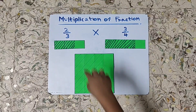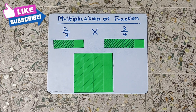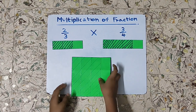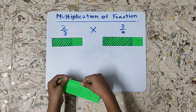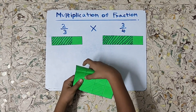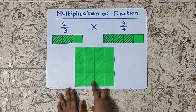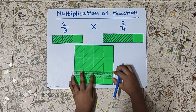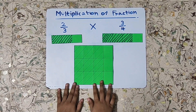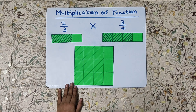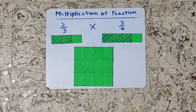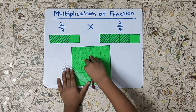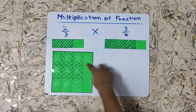Now we will represent two-thirds with the help of this paper. Since the denominator is three, we need to fold this paper into three equal parts. Now unfold the paper and highlight the folded area. Since the numerator is two, we will shade two parts among these three parts. I have shaded these two parts.